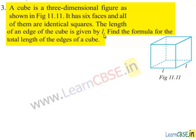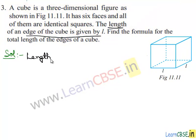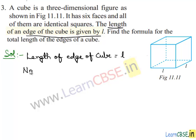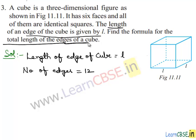The length of an edge of the cube is given by L. Now moving on to the solution. In the problem they are given the length of the edge of the cube as L. So the length of the edge of the cube is equal to L. It has 12 edges, therefore the number of edges is equal to 12. They have asked us to find out the total length of the edges of a cube.